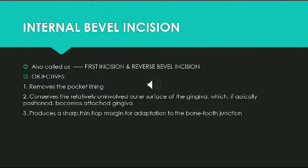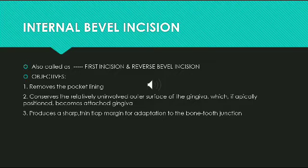Internal bevel incision is basic to most periodontal flap procedures. It is the incision from which the flap is reflected to expose the underlying bone and root. It has three important objectives: first, it removes the pocket lining; second, it conserves the relatively uninvolved outer surface of the gingiva which, if apically positioned, becomes attached gingiva — that is, if you go for an apical displaced flap, you can use this uninvolved gingiva and make it attached gingiva.